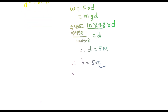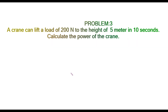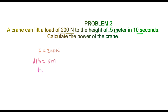Problem 3: A crane can lift a load of 200 newtons to a height of 5 meters in 10 seconds. Calculate the power of the crane. Writing the given: load (force) = 200 N, height (distance) = 5 m, time = 10 seconds. We have to find the power.